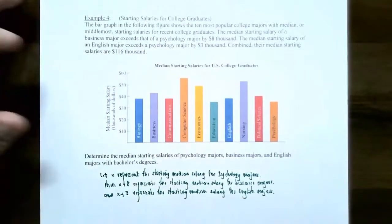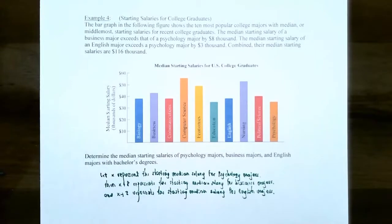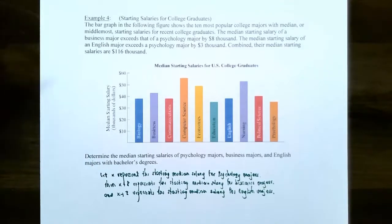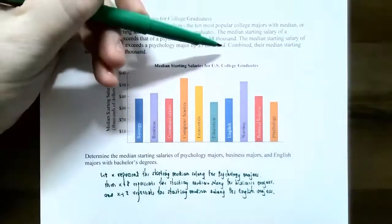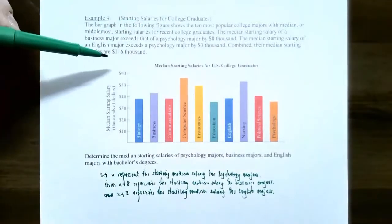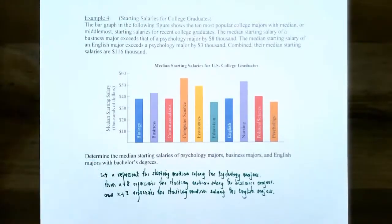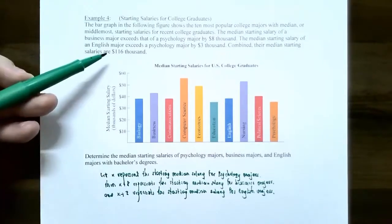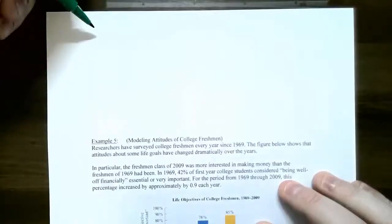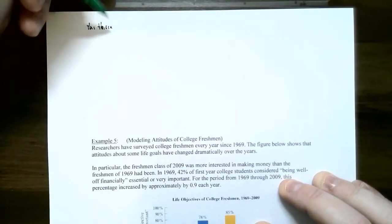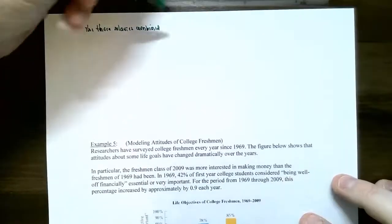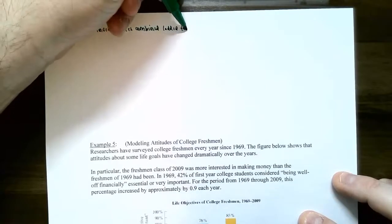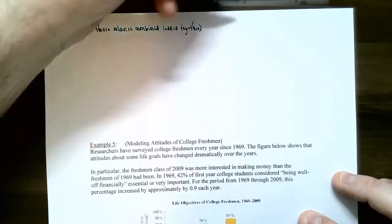We only have one variable X, but we have representations for all three majors in terms of X. The next step is to set up the linear equation. Notice that the last sentence says combined, their median starting salaries are $116,000. If you add these three expressions together, they should equal $116,000. Everything is in thousands as the units, so the three salaries combined — which means added together — equal 116.